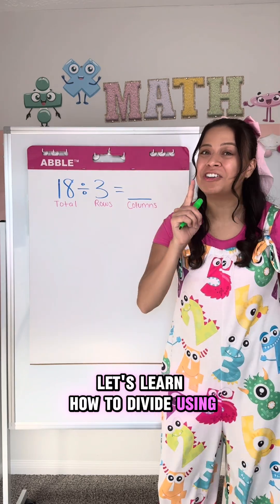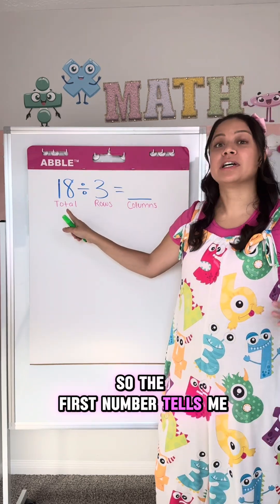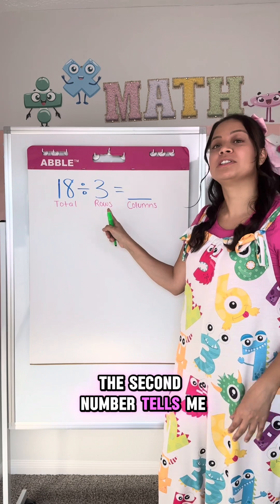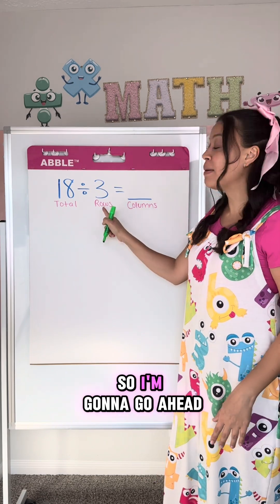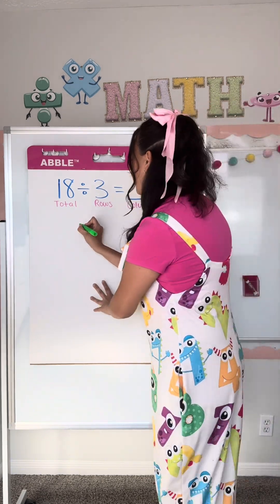Let's learn how to divide using an array. The first number tells me the total, the second number tells me the number of rows I'm going to draw. So I'm going to go ahead and draw three rows.